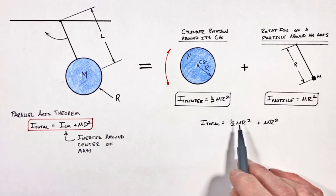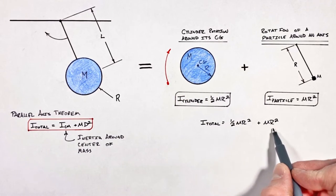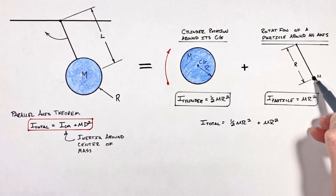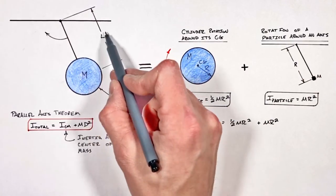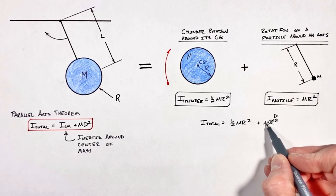Now we do run into an issue here where we have r, the radius of the cylinder, and then in this term we have r, the radius or the distance between the center of mass and the actual pivot point, which in this case was some distance L away. So in the parallel axis theorem, we refer to this as m d² rather than m r²,